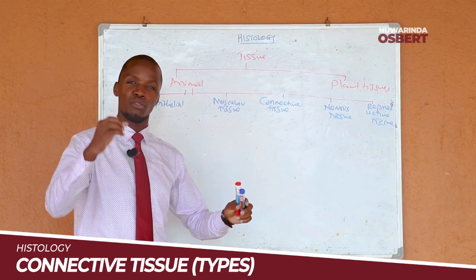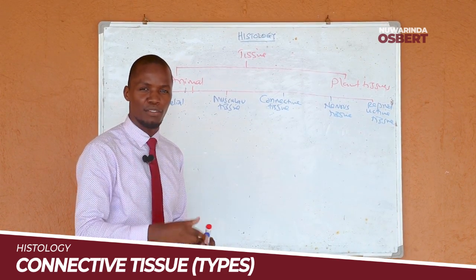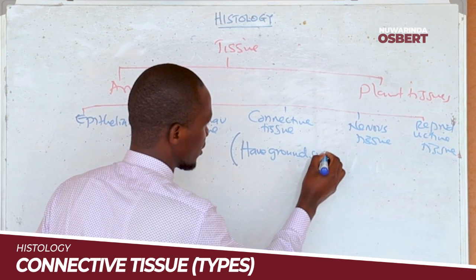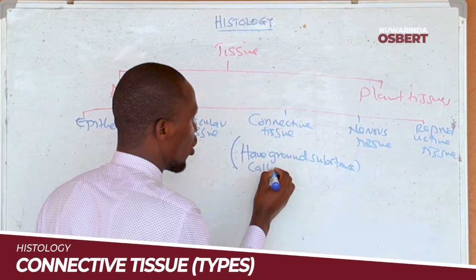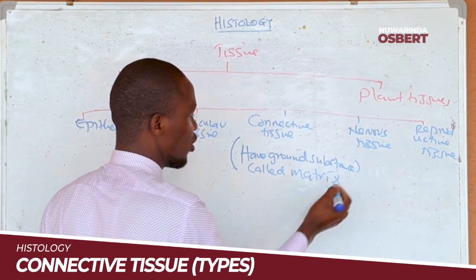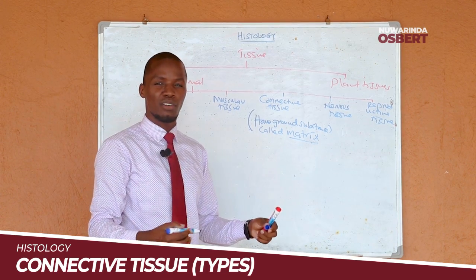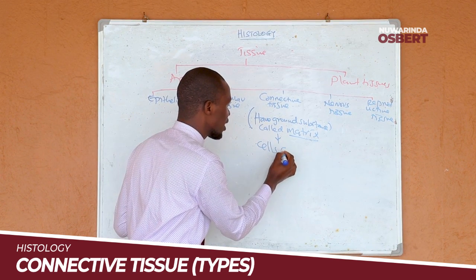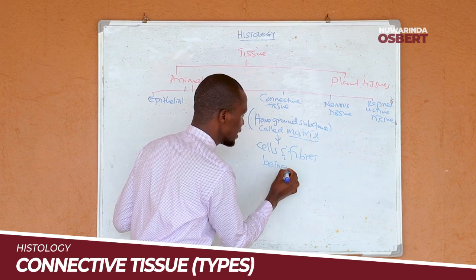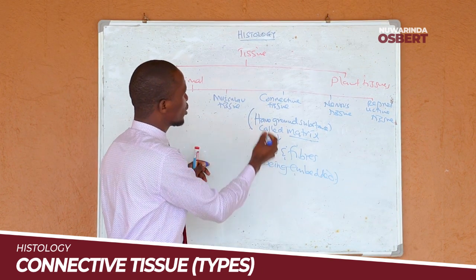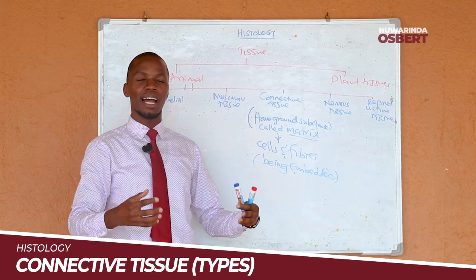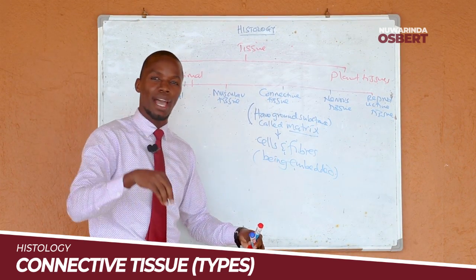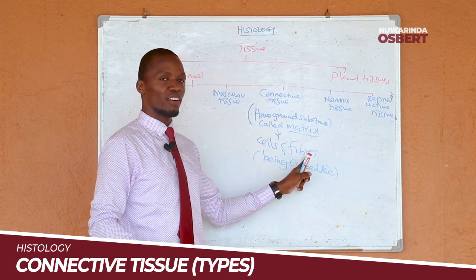Something special about connective tissue that you need to know from the start is that all connective tissues have what you call a ground substance. We call this ground substance a matrix — it is like a liquid. Within this matrix, you find very many cells and fibers being embedded. If you can remember one thing about connective tissues, just remember they contain a liquid ground substance called a matrix, within which you find different cells and different fibers entangled together.